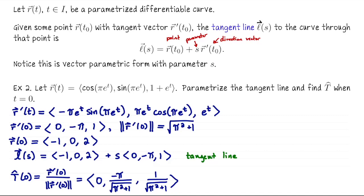That was a quick look at the unit tangent vector and the equation for a tangent line. I wanted to introduce T-hat because we're about to use it — we're going to use T-hat to define curvature. We're also going to see similar vectors N-hat and B-hat, which I'll define later. So keep in mind T-hat is a unit length tangent vector to a curve.